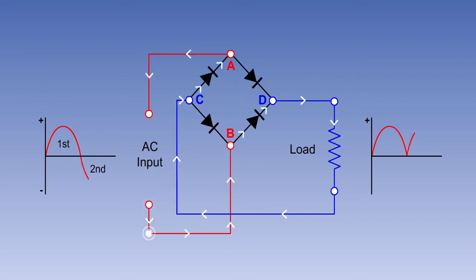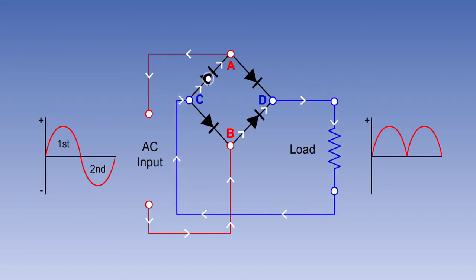In the next half-cycle, the polarity will be reversed, making point A negative and B positive. However, because of the arrangement of the diodes, the current flows through the load in the same direction as before.